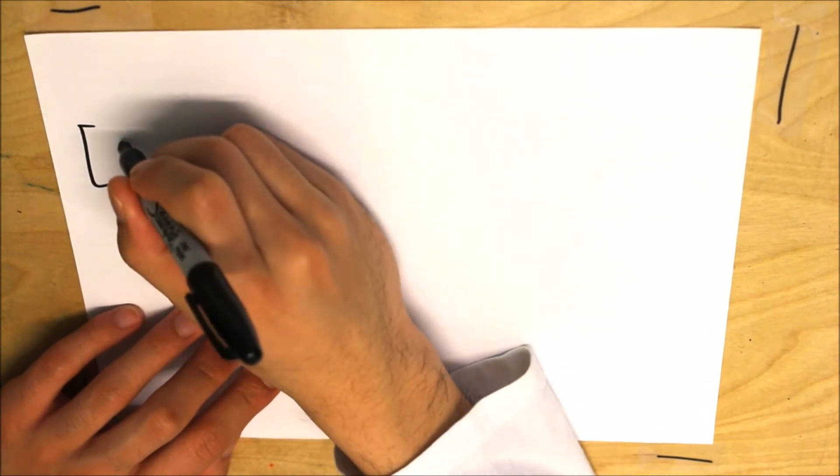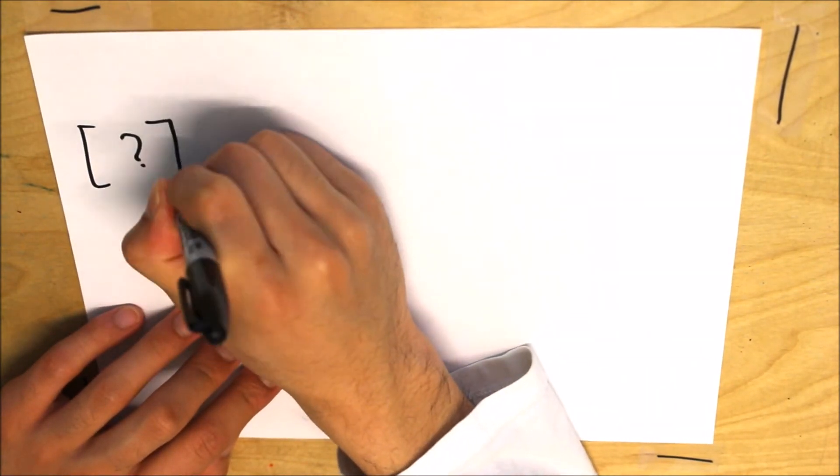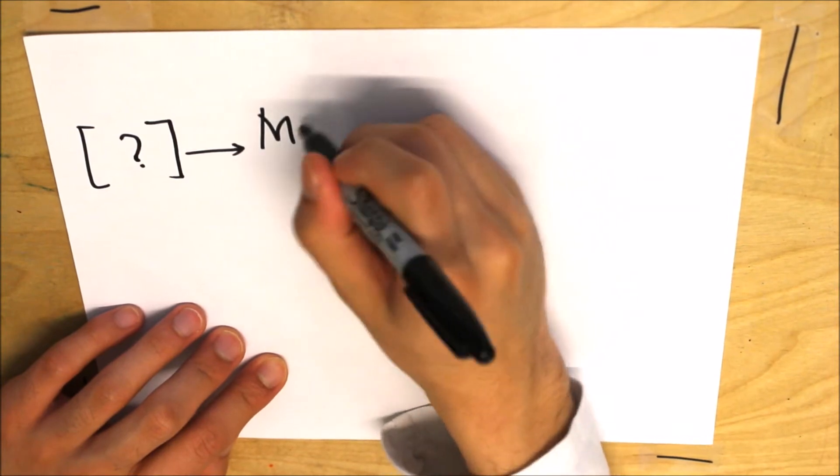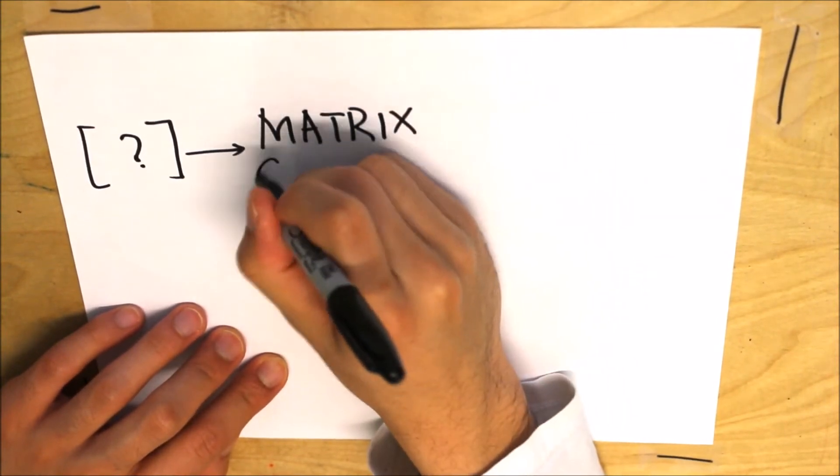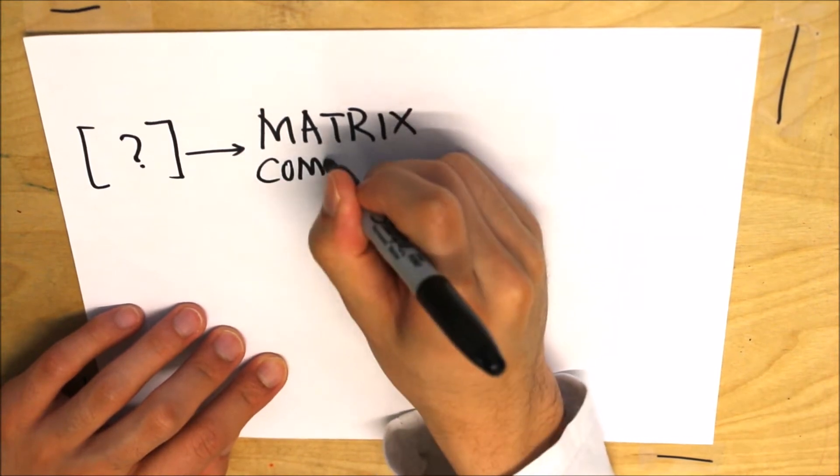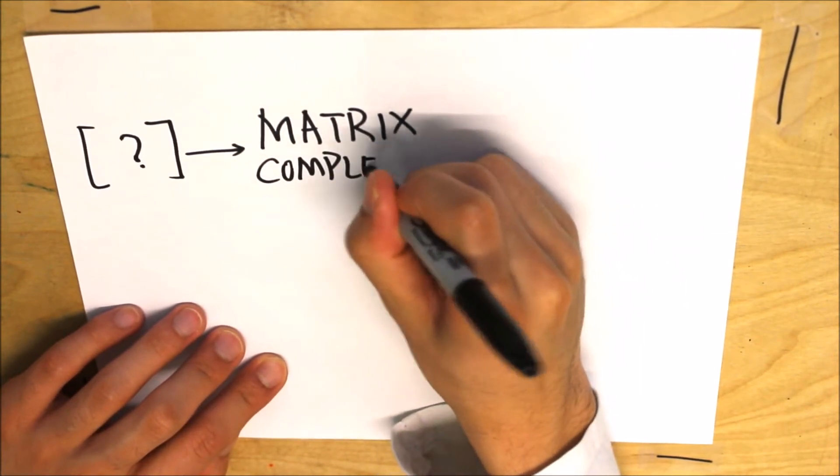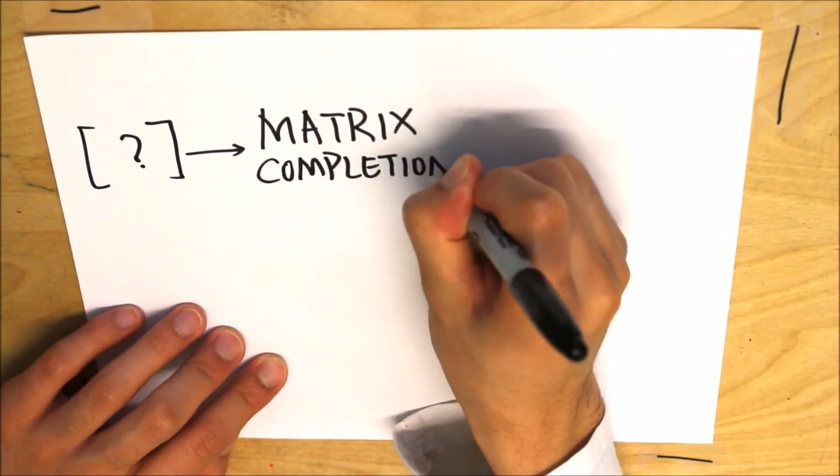Let me give you a brief picture of how all this works. So we have a matrix with a question mark because there are unknown entries. And then by performing matrix completion, we recover the unknown entries from the known entries of the original matrix.